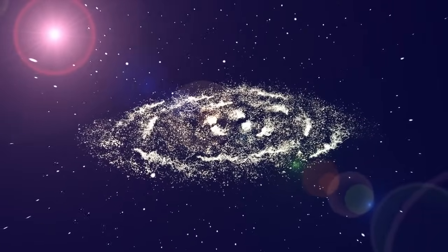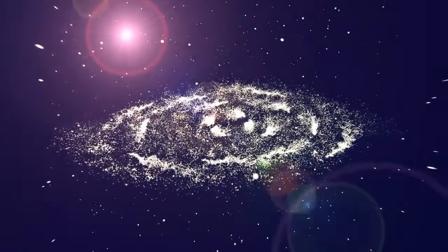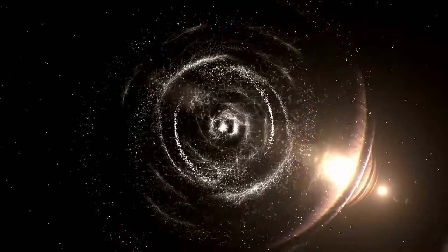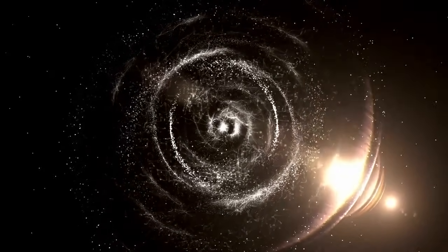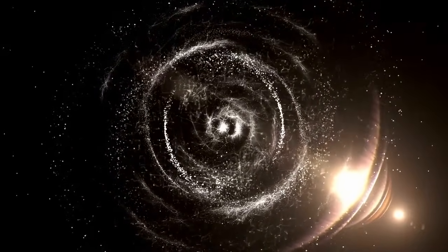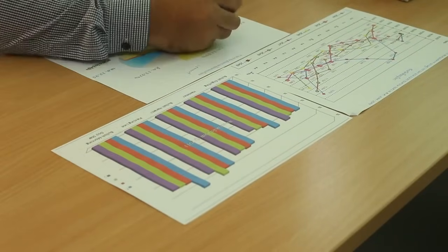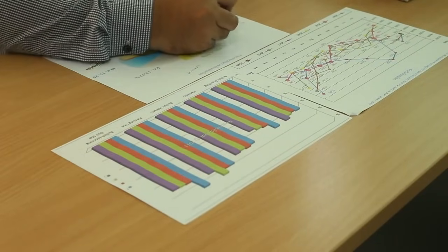3i Atlas's mysterious escort objects repositioned themselves during the event, forming a different geometric pattern than their usual configuration. 3i Atlas just fired a beam of concentrated energy directly at Earth, and what happened when that beam hit our planet is unlike anything scientists have ever witnessed.